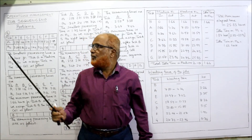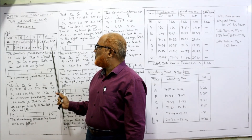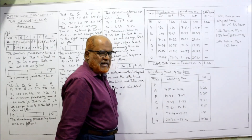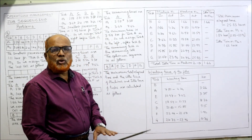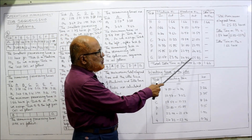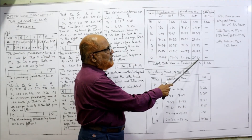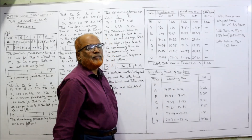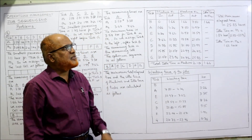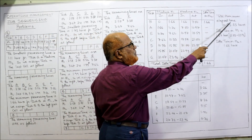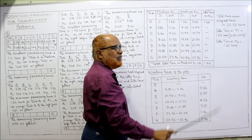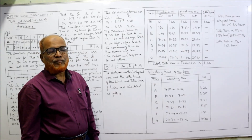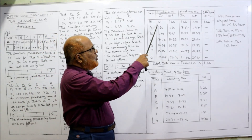Task G on M2 is 1.11, so 24.72 + 1.11 = 25.83. The total elapsed time is 25.83 hours — work started at 0 and ended at 25.83. That is the total minimum elapsed time: 25.83 hours. Now, what is the idle time for machine M1? There is no in-between idle time for M1.